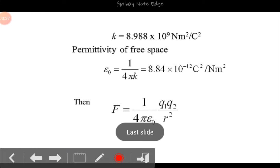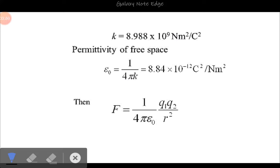And the epsilon naught that is used is the permittivity of free space and it is 8.84 × 10^-12 C²/(N·m²). Now what is epsilon naught?